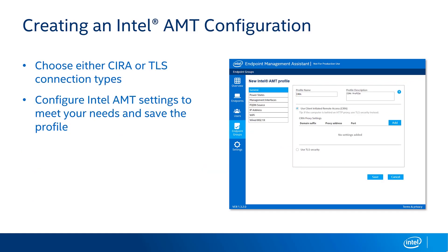Let's start with some high-level stuff. First, you want to create Intel AMT configurations. You have the option of configuring AMT in CIRA or TLS mode, as well as dialing in all the settings to make sure that AMT works the way you need it to in your environment. We'll go into more detail on what this looks like in the demo in this video.